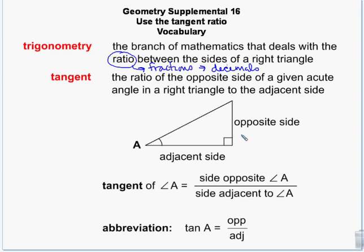We don't generally talk about the right angle when dealing with sine, cosine, and tangent — we're talking about the two other angles in the triangle. So if we have angle A here, the tangent of angle A is the opposite side — whatever that length is — divided by the adjacent side, the side that touches it. We get opposite over adjacent.